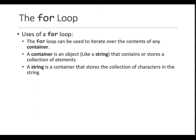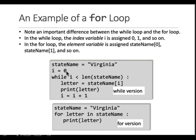To iterate the contents over a list, we can use a for loop. An example is given here, so there are two versions given: the while version and the for version.